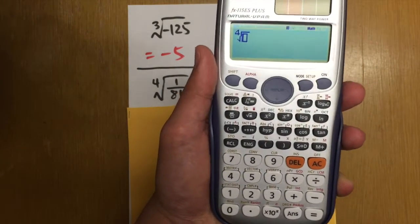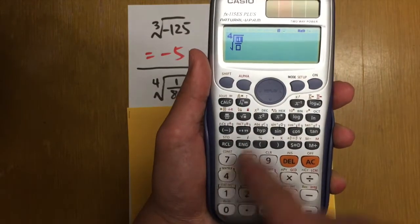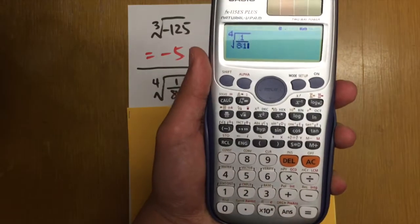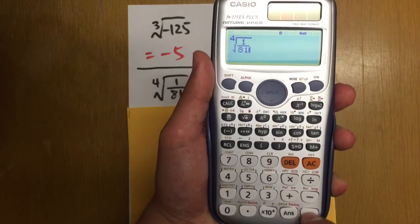And then inside here, we have to enter a fraction. So fraction key 1, go down 81. Like this. And then equal.